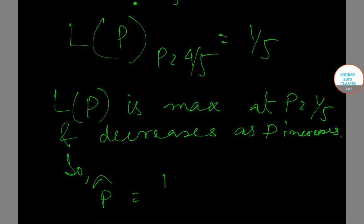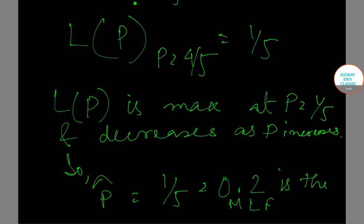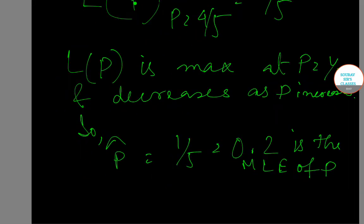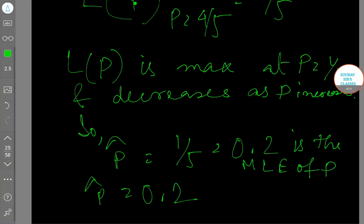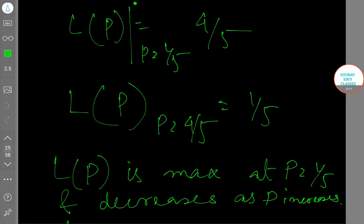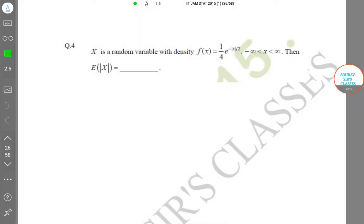Therefore, p-hat equals 1/5, that is 0.2, is the maximum likelihood estimator of p. Our answer is p-hat equals 0.2. Now let's move on to the next question — Question Number 4 of Section C.